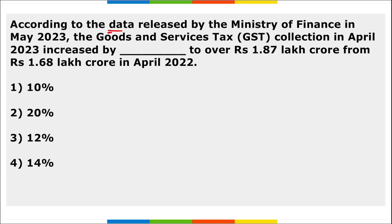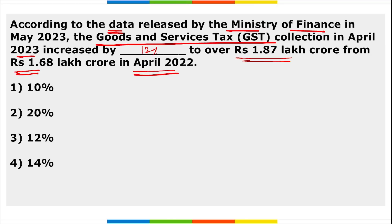According to data released by the Ministry of Finance in May, GST collection in April 2023 increased by almost 12% to over 1.87 lakh crore rupees, up from 1.68 lakh crore in April 2022. GST stands for Goods and Services Tax and is an indirect tax.